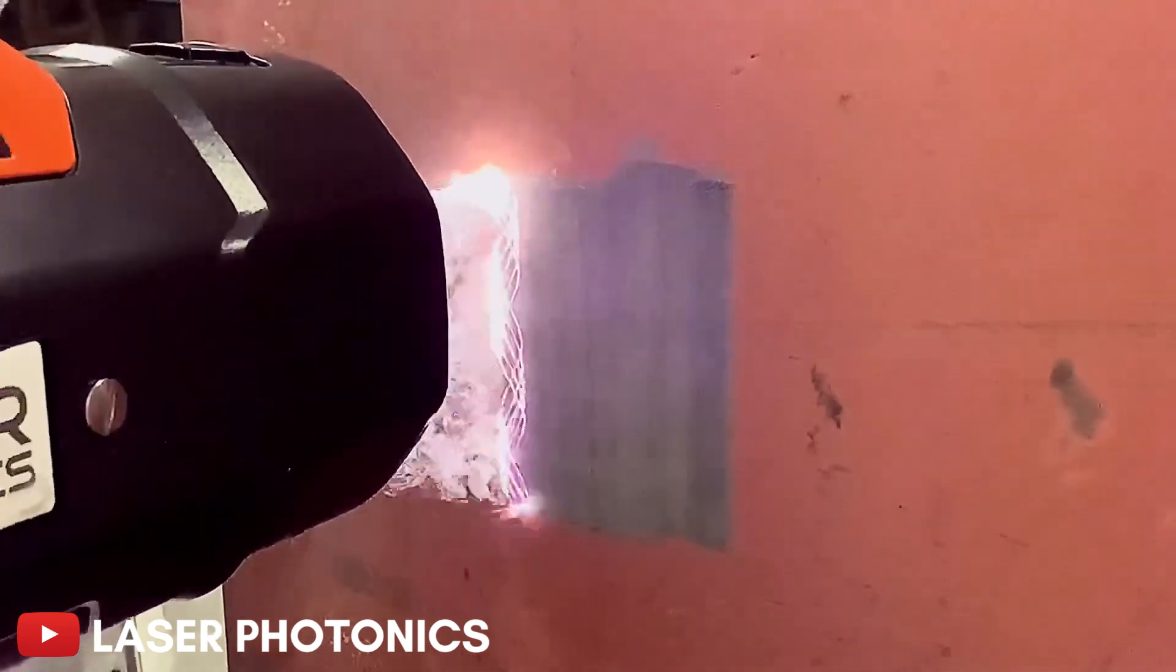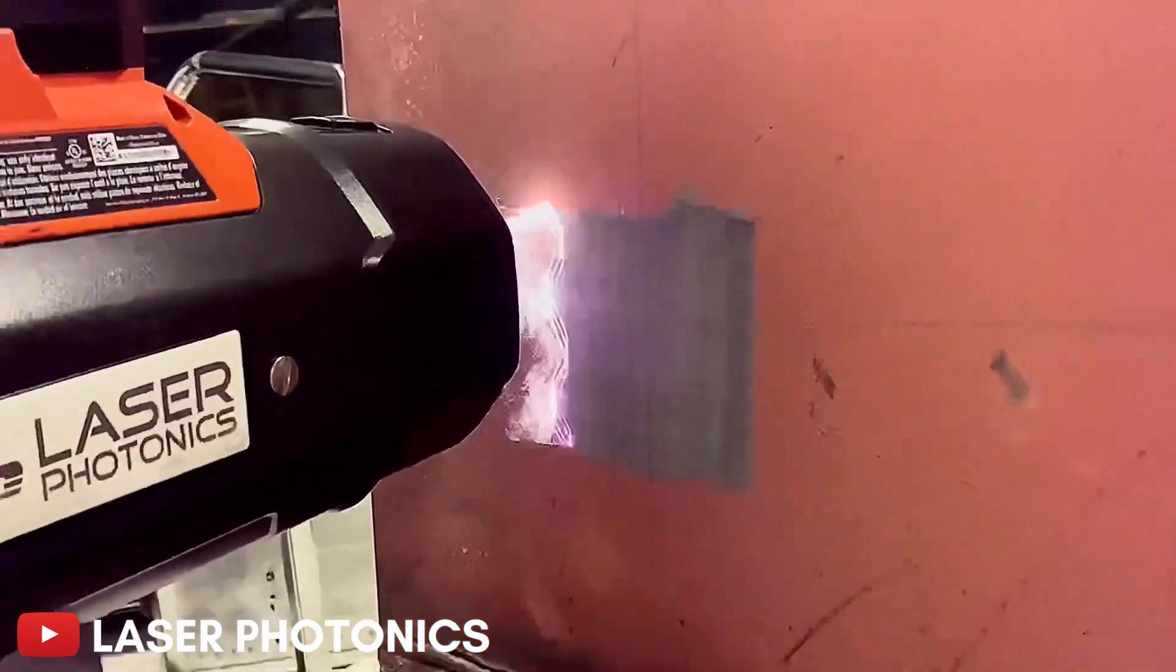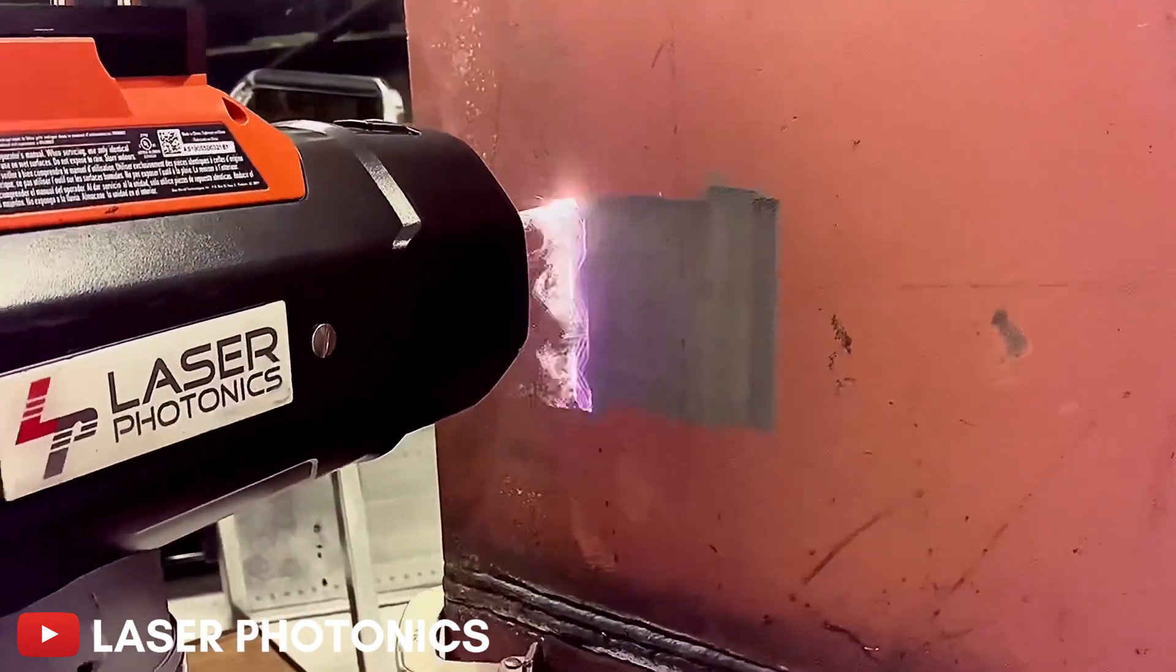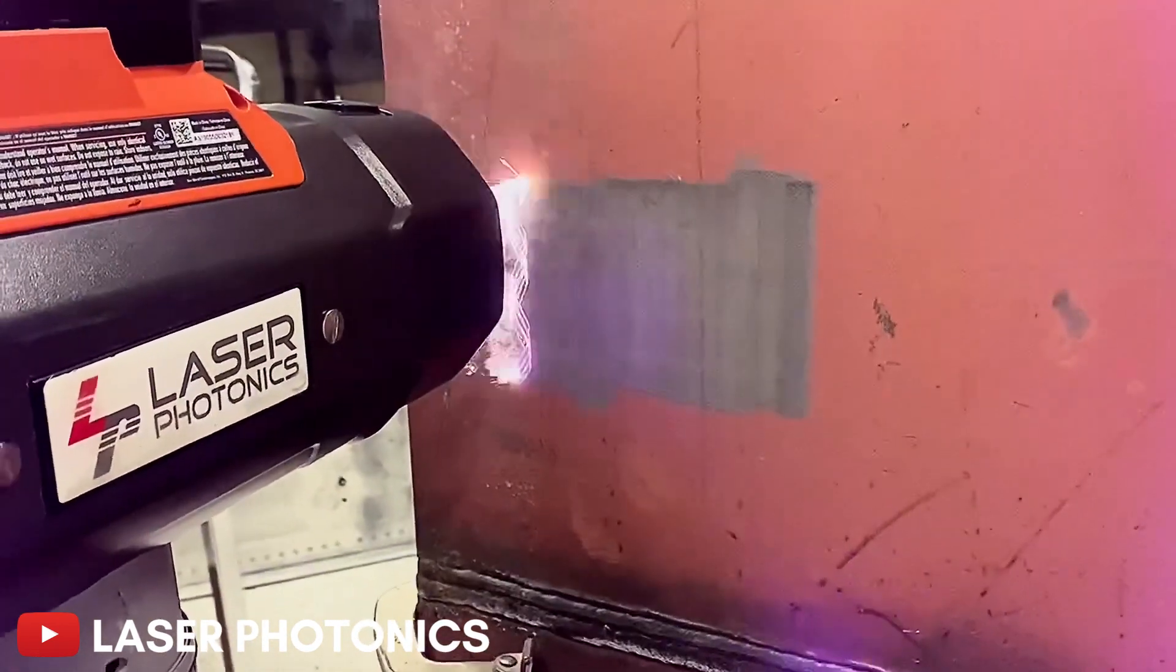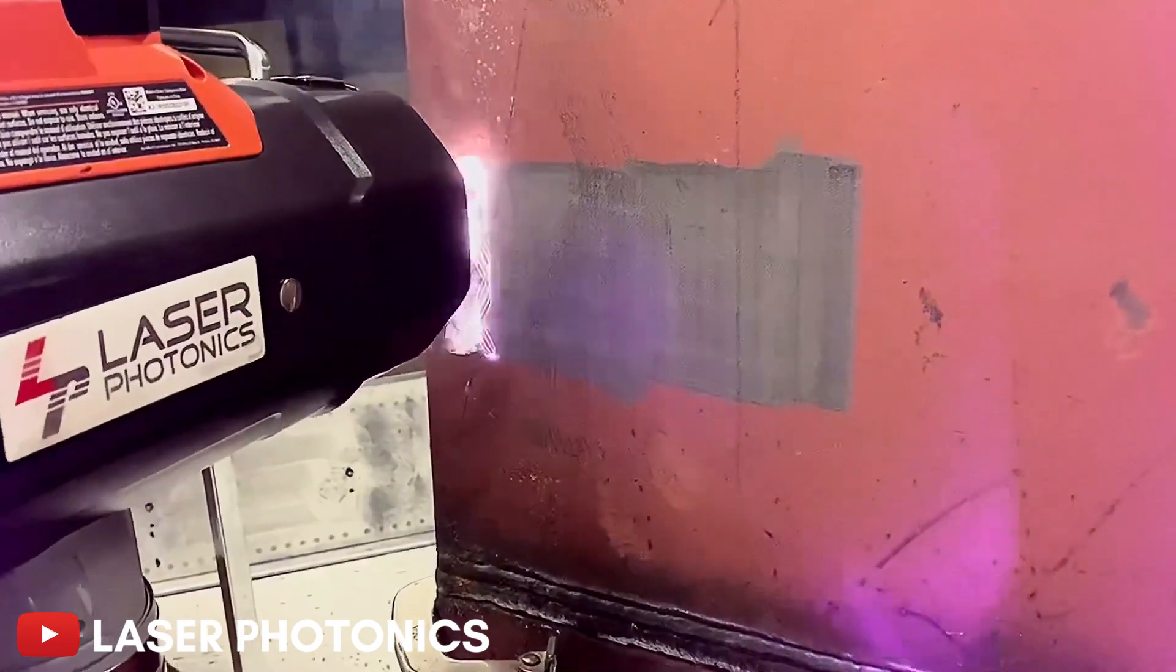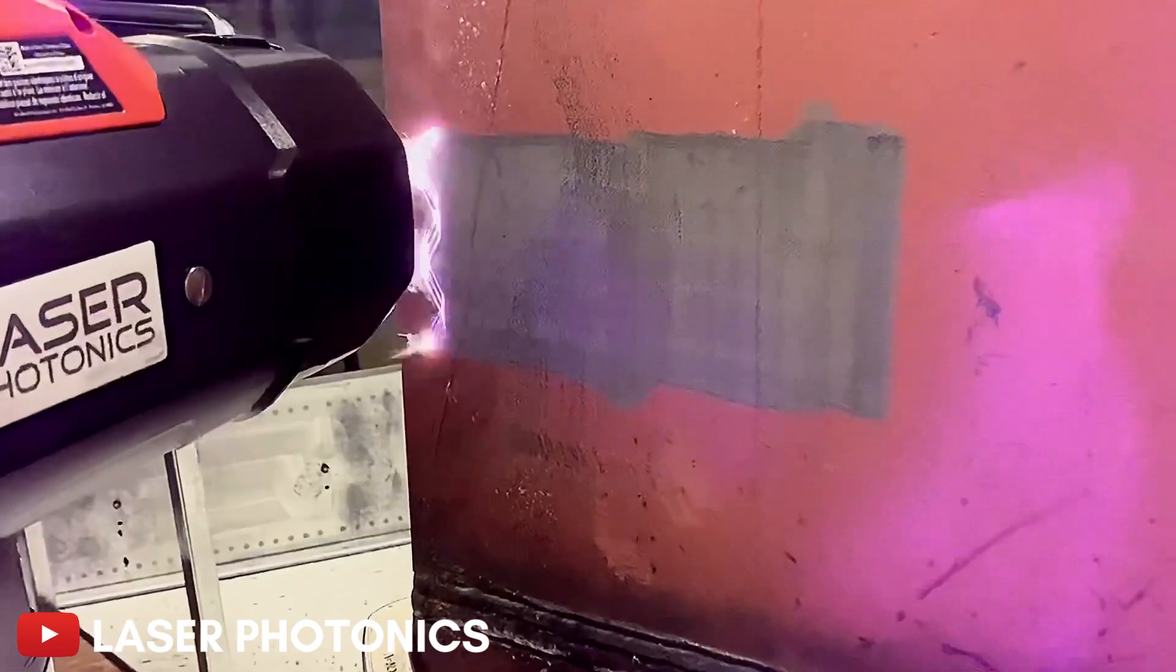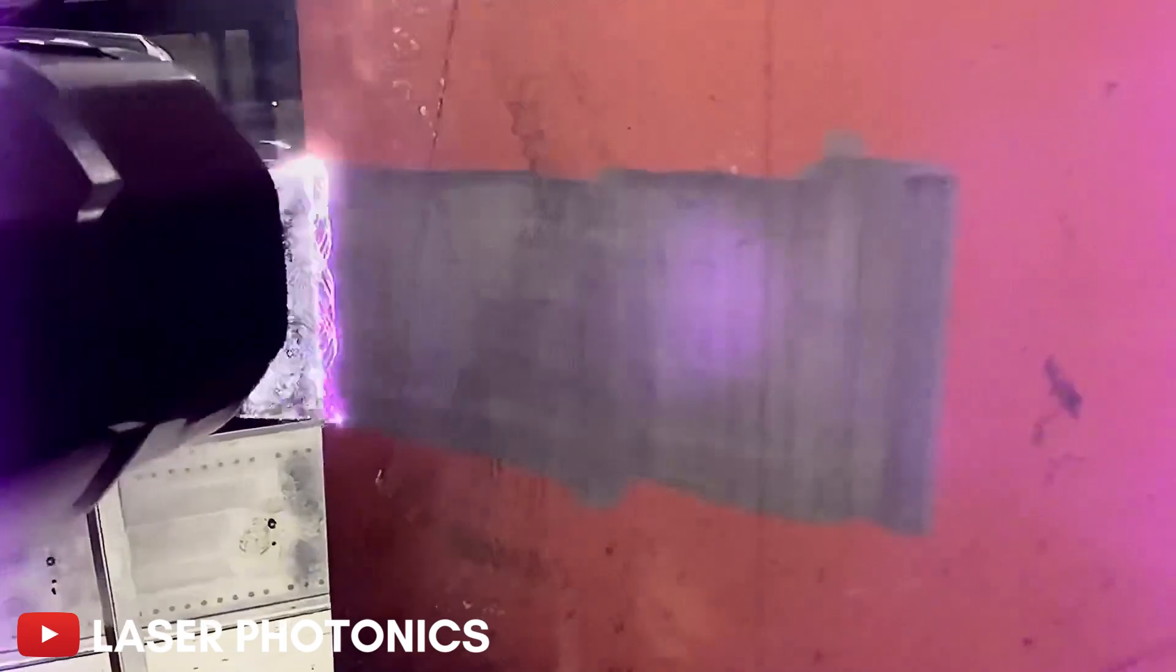For a given surface area, putting the same energy in a much shorter pulse increases the power. The pulsed laser methodology is more efficient and provides a faster removal speed than the continuous beam. While the pulsed laser beam does the cleaning faster, it also ensures that the underlying material, typically a metal, does not heat up too much.